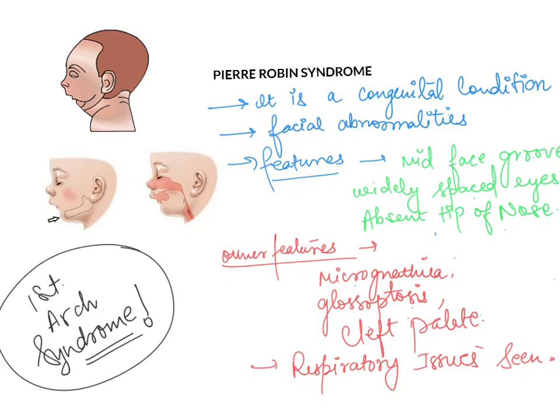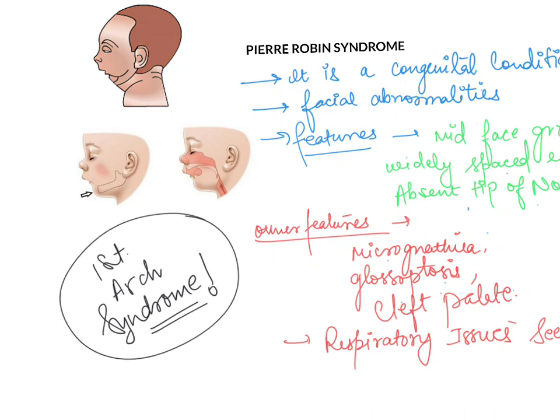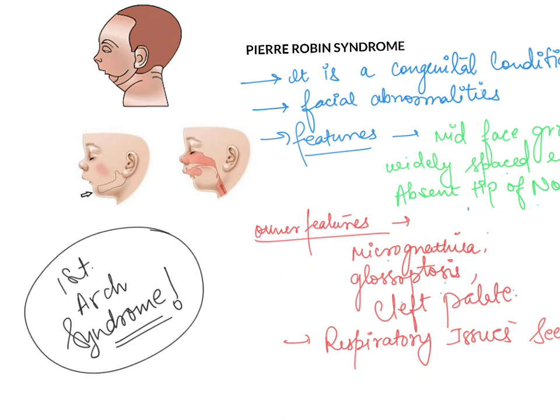We are going to talk about Pierre Robin Syndrome. It is a condition caused due to the first arch syndrome, also known as the first pharyngeal arch syndrome, and it is because of this that the problem occurs.